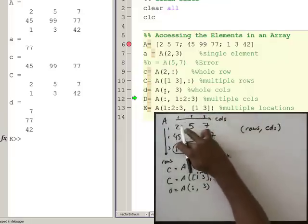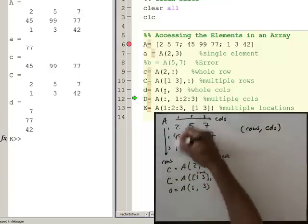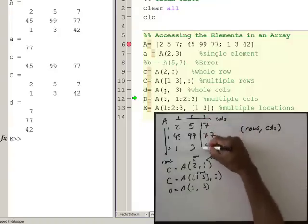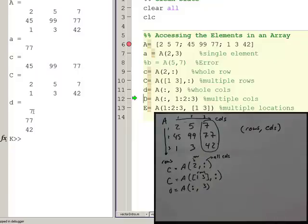Is what we call a vertical vector of 7, which is just one column, of 7, 77, and 42, as you can see, that's the third column in array A.